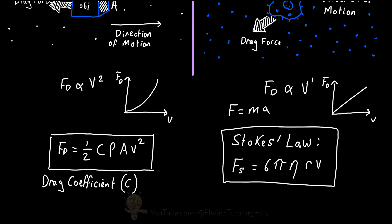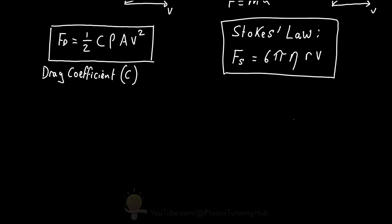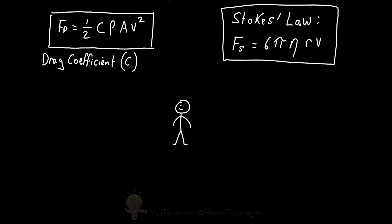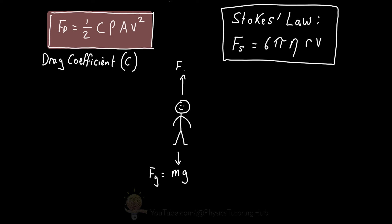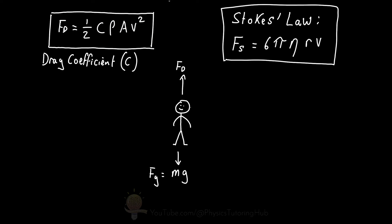The first thing we're going to do is estimate the terminal velocity of a skydiver falling feet first toward the ground, using the drag force equation and Newton's Second Law. When a skydiver is falling through the air, there are two forces acting on them: the force due to gravity, which is the skydiver's mass multiplied by the acceleration due to gravity, and the upward drag force described by our equation. We'll ignore buoyancy because the skydiver's density is much greater than the surrounding air.